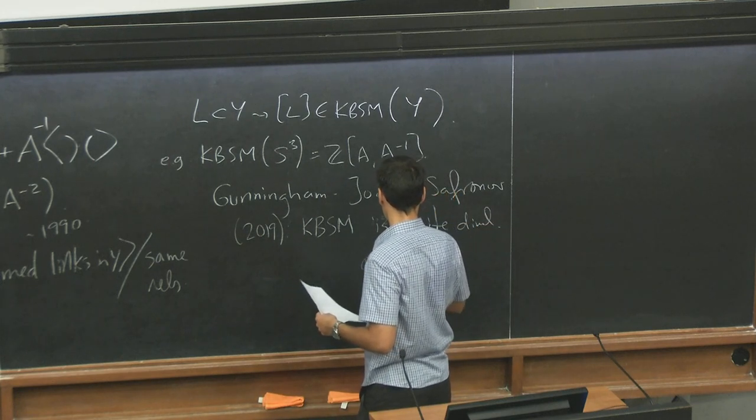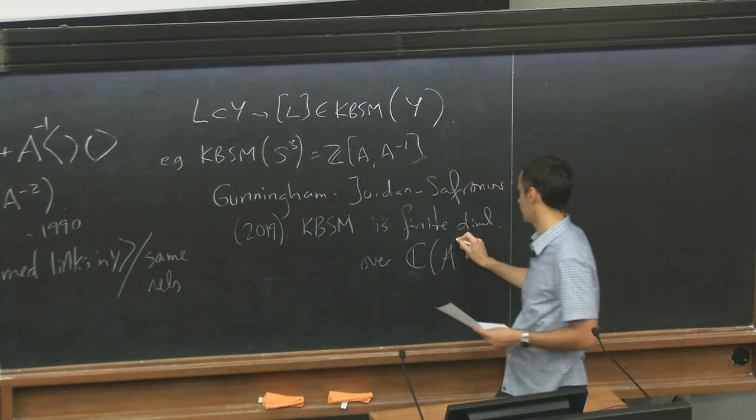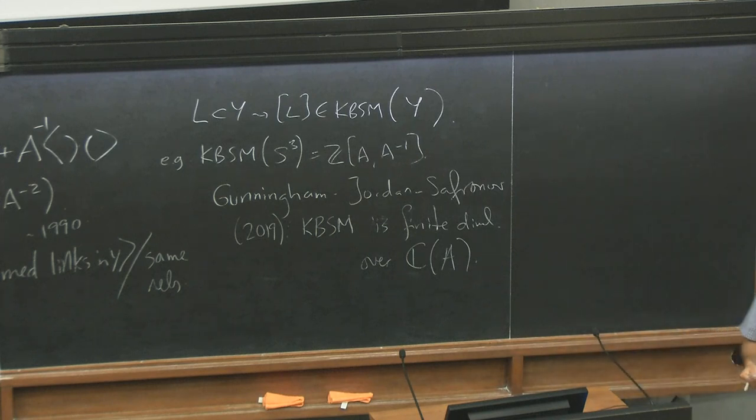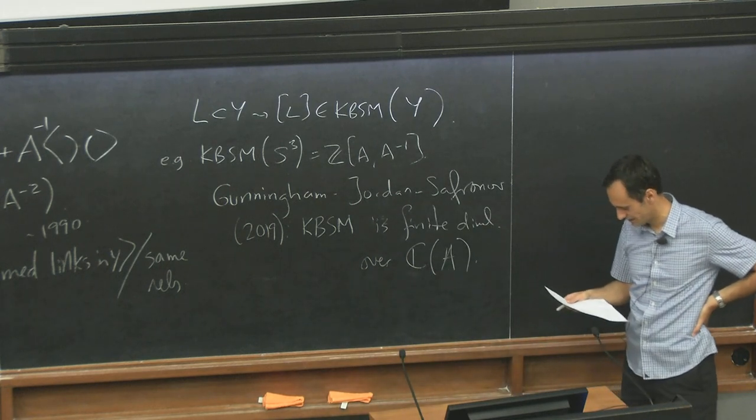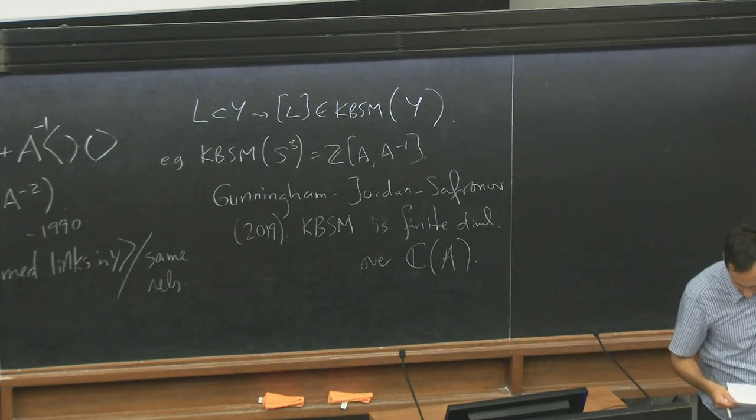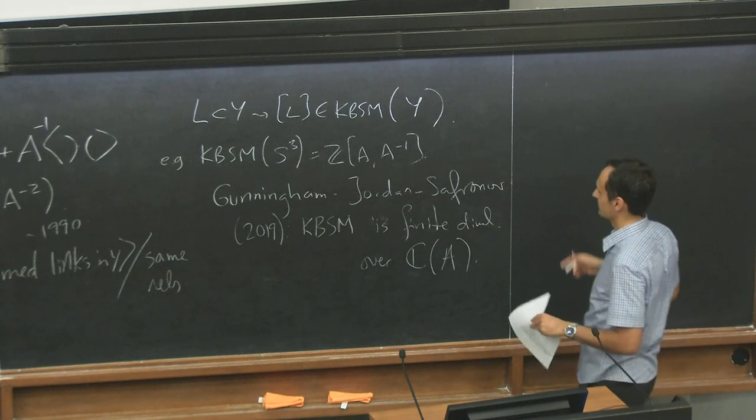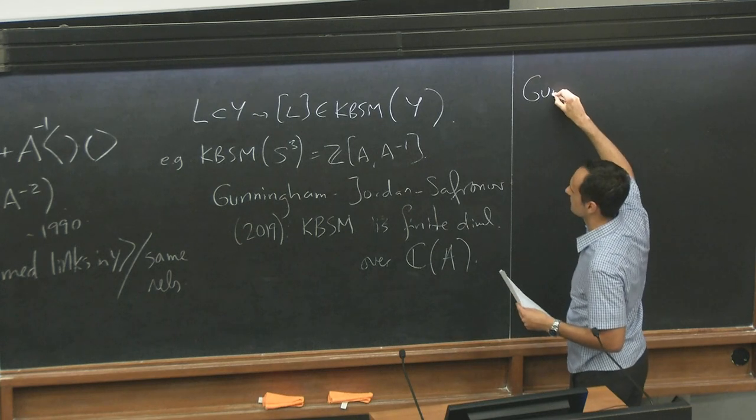showed that KBSM is finite dimensional over, let's say, the field of fractions in A. So this is non-trivial. I mean, you know, if you make a definition like this, you might get something infinite dimensional that's completely uncomputable. But it turns out to be finite dimensional.